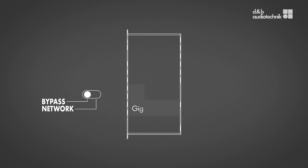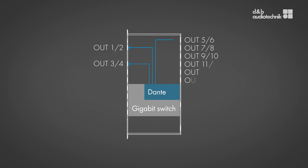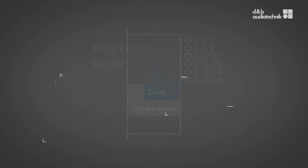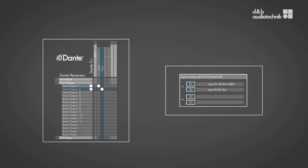In network mode, the DS10 becomes a full-blooded Dante audio device. Its main function is to be a breakout box with eight AES outputs equaling 16 audio channels. The respective Dante channel names are also embedded into the AES output signals.